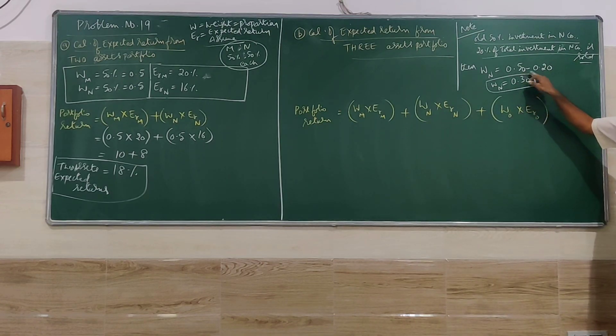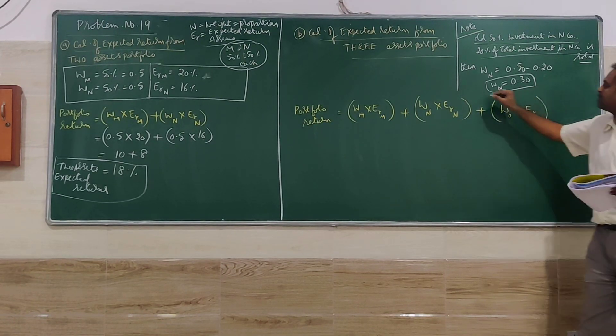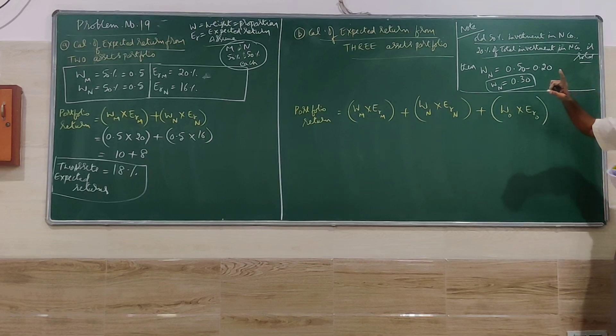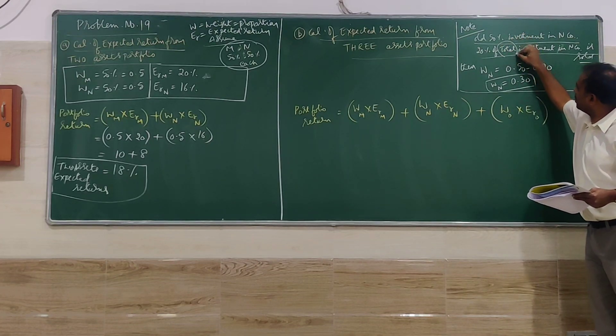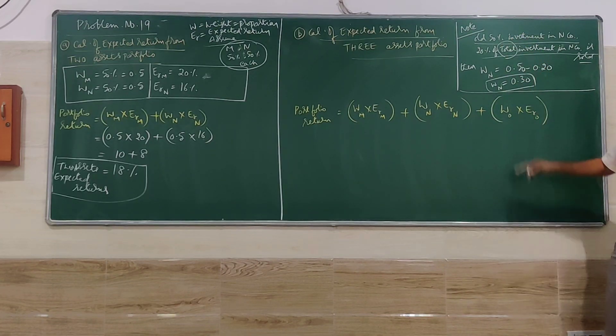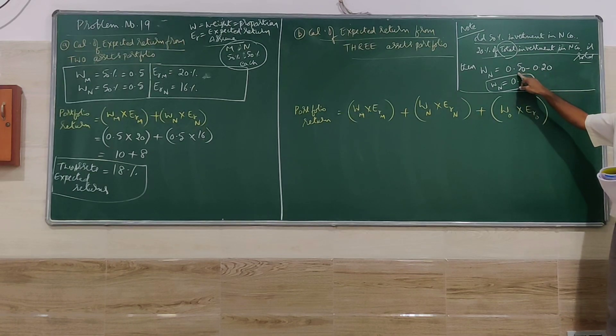So out of 50%, 20% is sold, so the weight of N will become 30%. This is the most important word there: 'total investment.' Not 20% of N's investment, but 20% of the whole investment.